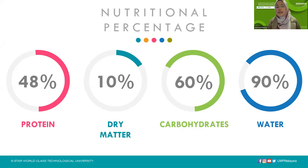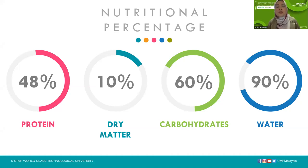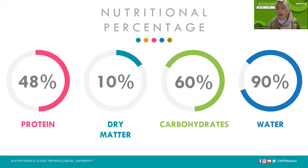Based on nutritional analysis, the protein content of mushroom can be up to 48 percent of dry matter, carbohydrates can be up to 60 percent, and the water content is up to 90 percent. That's why you can see that the structure of the mushroom itself is mushy and a little bit soft because of the high water content.